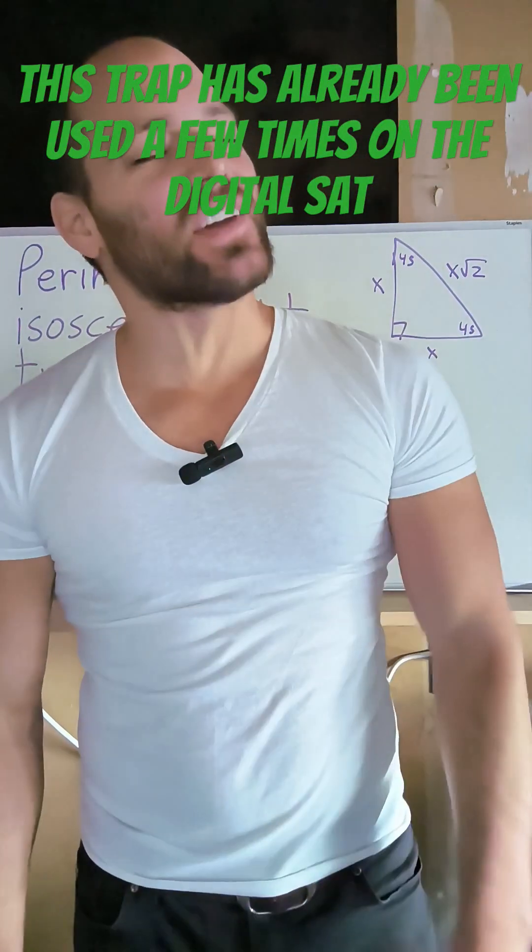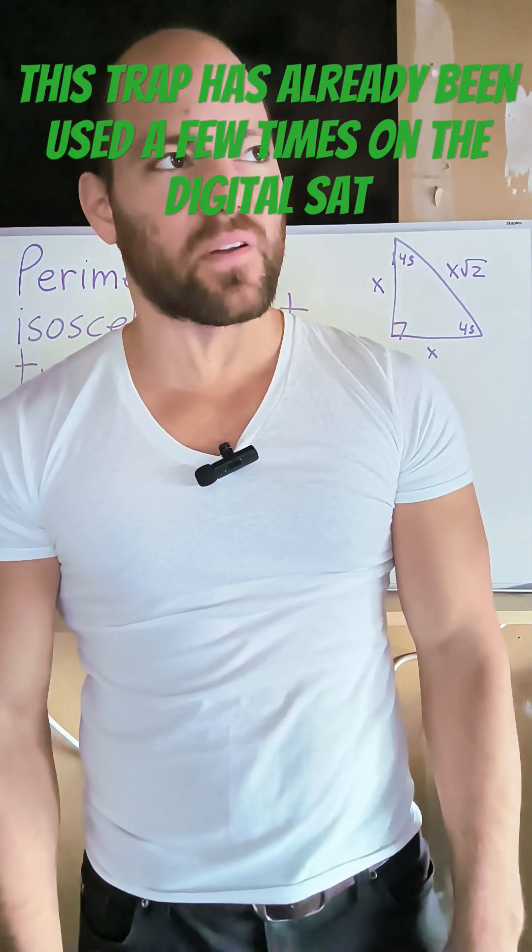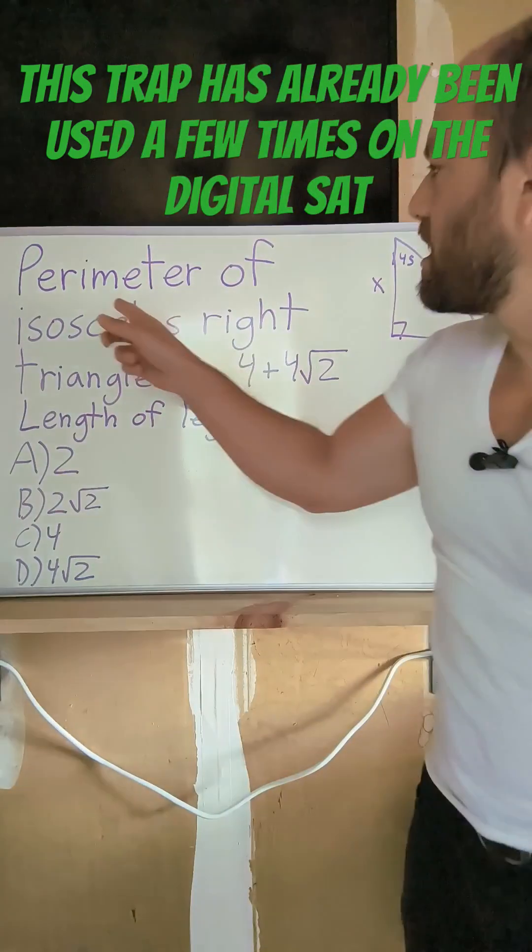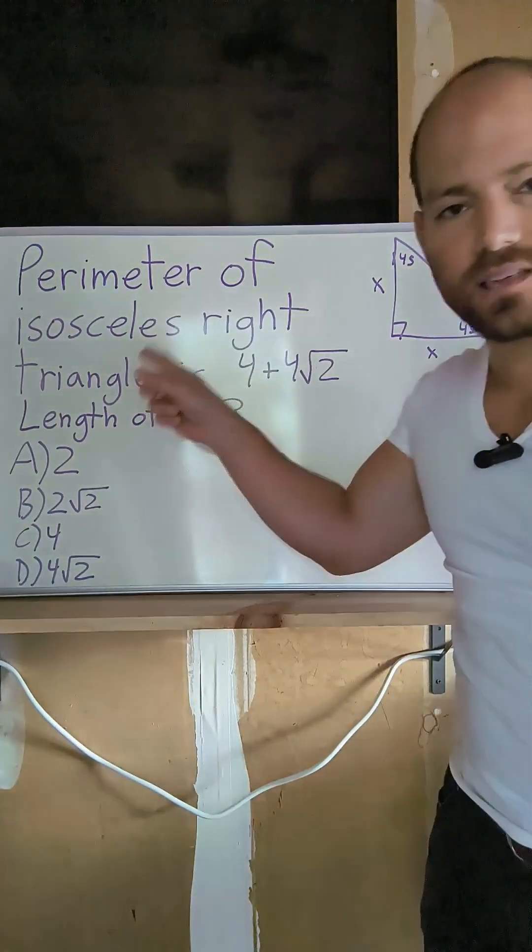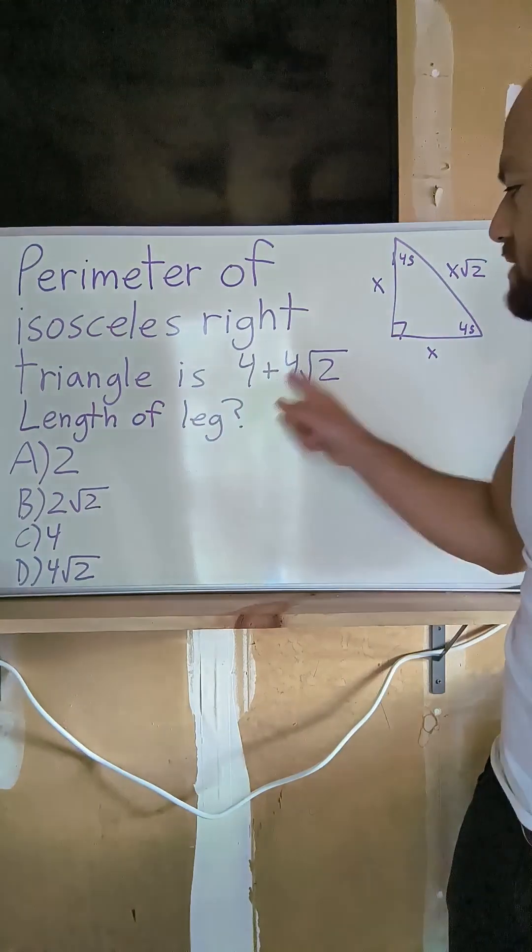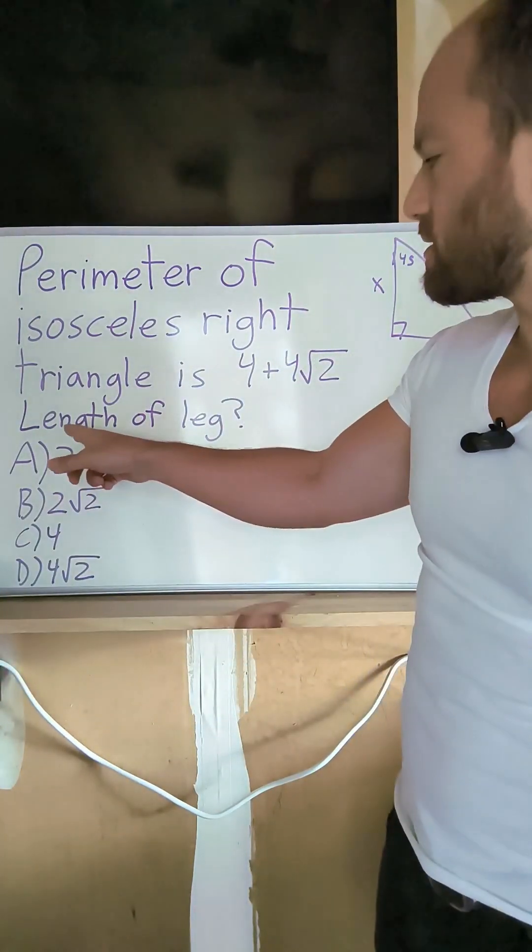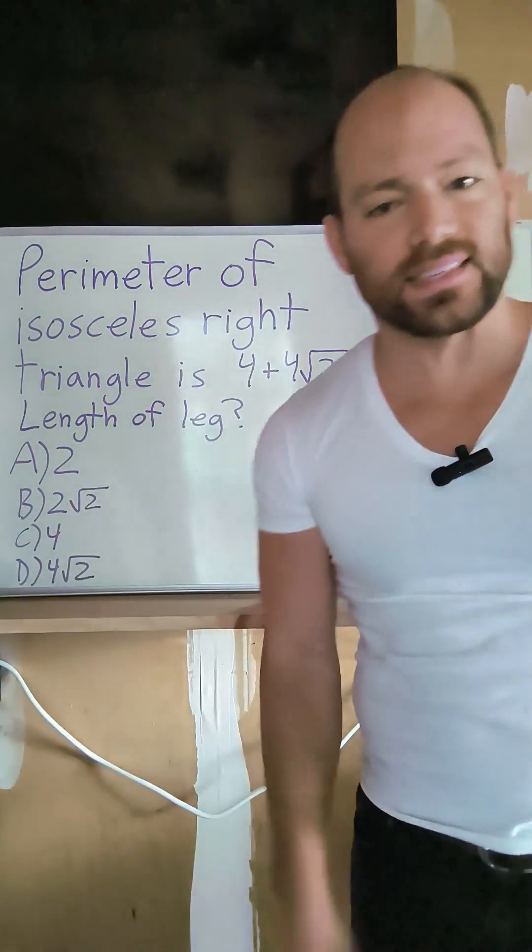So, I've been noticing that they do this annoying thing on the SAT where they tell us something like this, that the perimeter of an isosceles right triangle is 4 plus 4 root 2. Okay, whatever. And they ask us for how long one of the legs is.